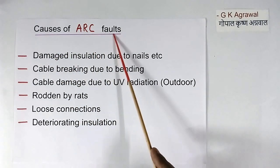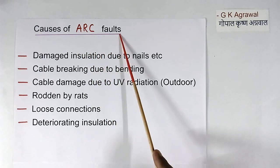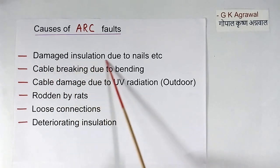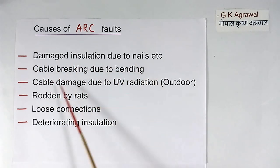Now causes of arc fault. This happens due to cut in insulation and wire. It may be due to damaged insulation, due to nails, cable breaking due to bending, cable damage due to UV radiation, cut by rats, loose connections. In this insulation quality will come down after using many years. So because of all these reasons, arc fault may be possible.